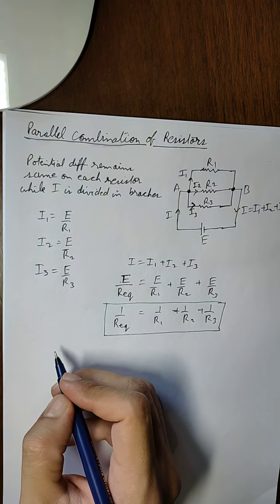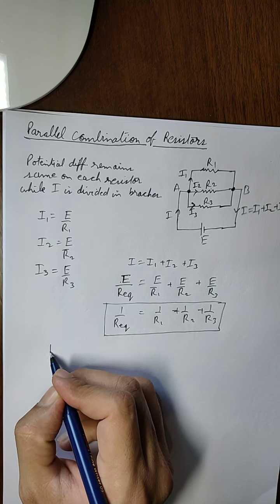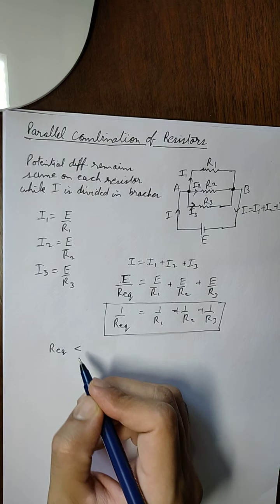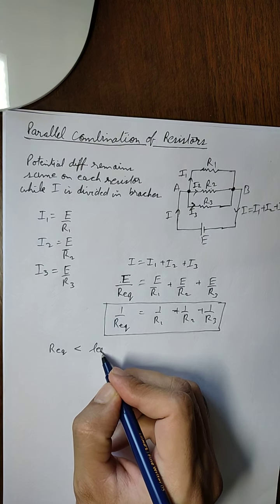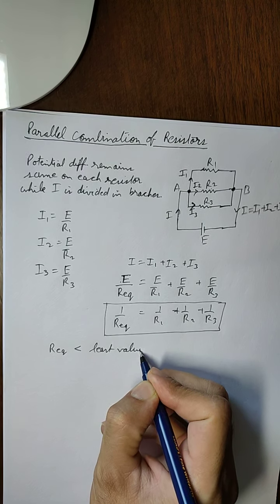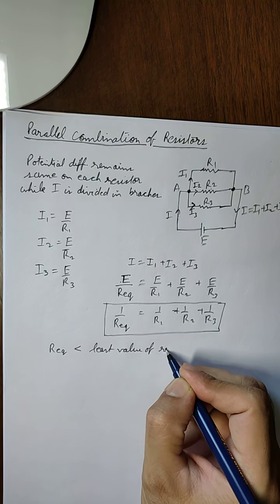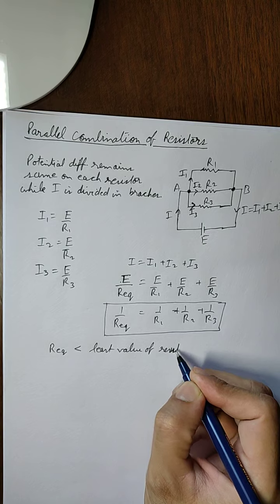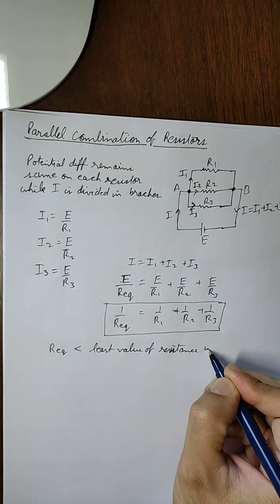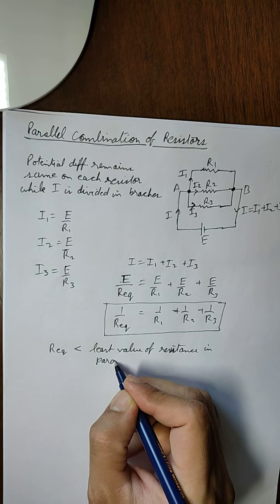Now here we should note that R equivalent will always be less than the least value of resistance in parallel combination.